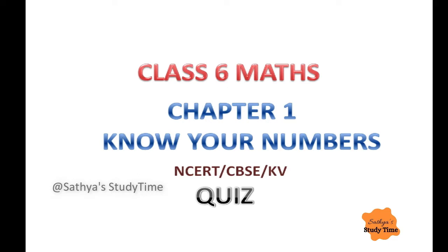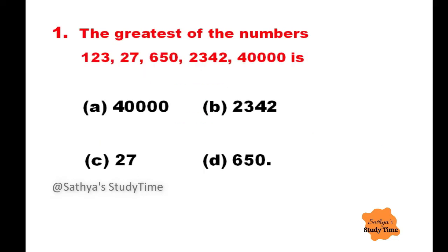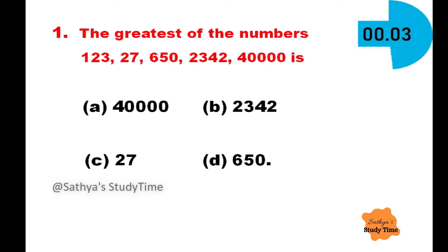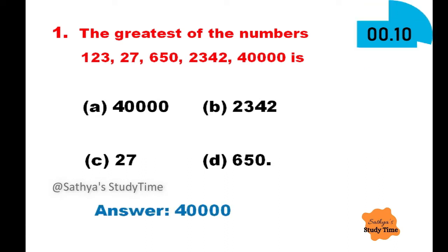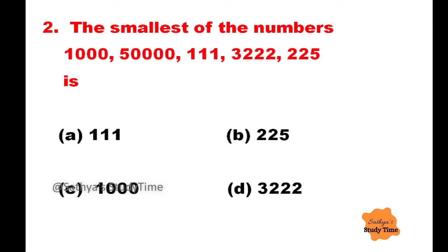Question 1: The greatest of the numbers 123, 27, 650, 23, 42, 40,000 is. The options are given. Your time starts now. Time up. The answer is 40,000.